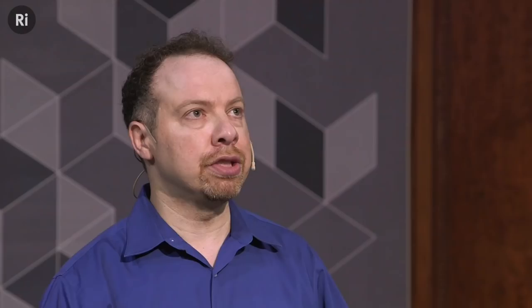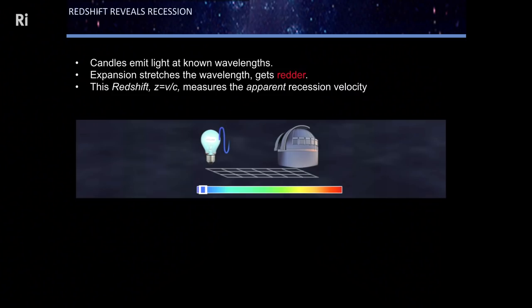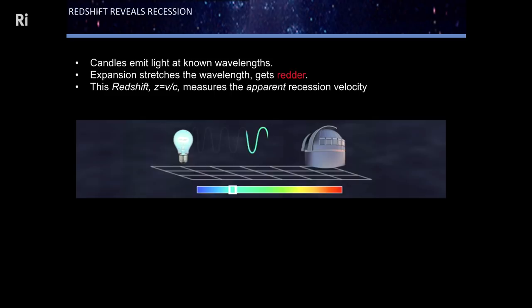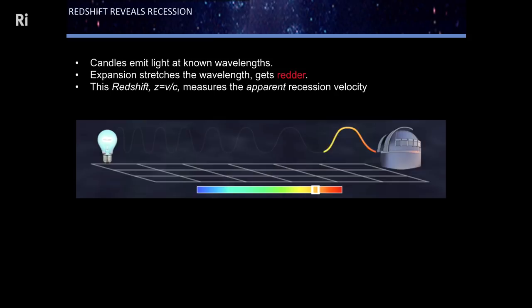The other aspect of the expansion is that we see the galaxies apparently rushing away from us. The light is emitted by any object—including these standard candles—at certain known wavelengths that we can determine in the laboratory. But as that light travels to us, the wavelengths of light are stretched. It's a little like the Doppler shift you may be familiar with, but the cause is different. It's not actually the motion of the object—it's the expansion of space itself. We call this the redshift, and it allows us to measure this motion away from us.